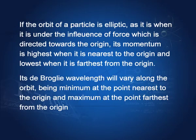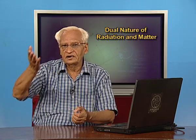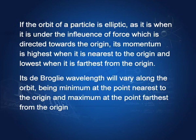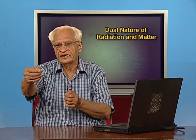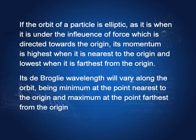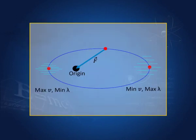If the orbit of the particle is elliptic — as it is when under the influence of a central force directed towards the origin, such as gravitational force causing a planet's elliptic path — when the particle is nearest to the origin its velocity is maximum and lambda is minimum; when it is farthest from the origin its velocity is least and lambda is maximum.